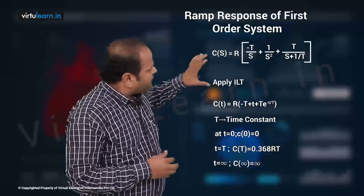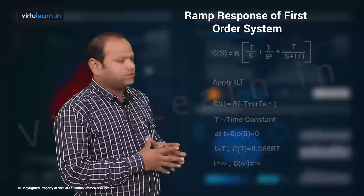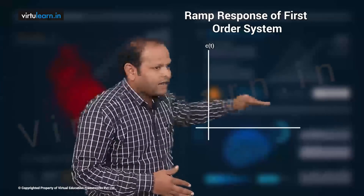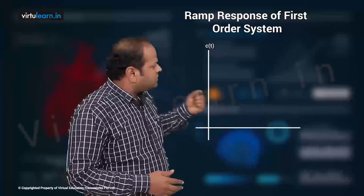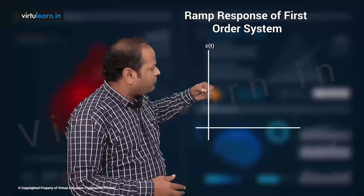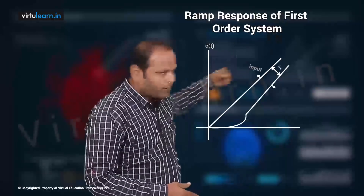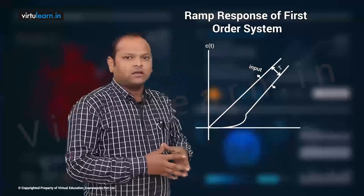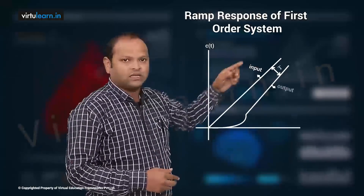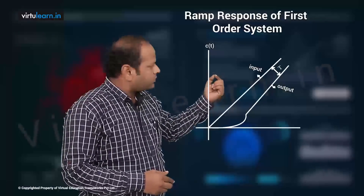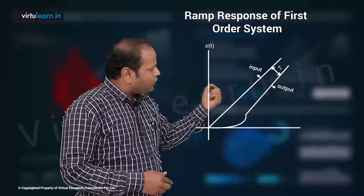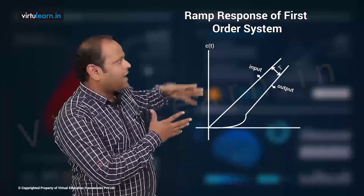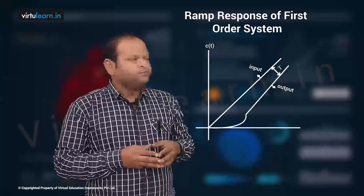Now if you plot this equation, with c(t) on the vertical axis and time on the horizontal axis: first I will plot the input, which is a ramp. As the input is increasing, the output also increases, but the shape of the output is slightly exponential initially, then after that it becomes parallel to the ramp input.